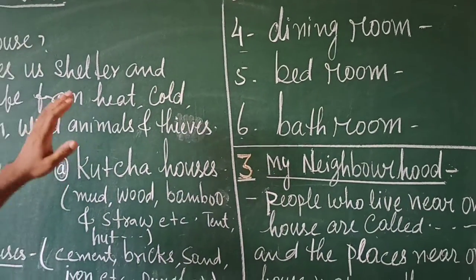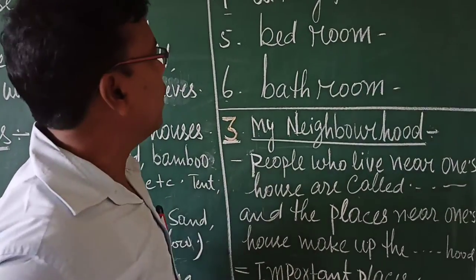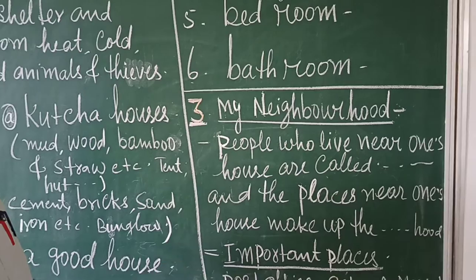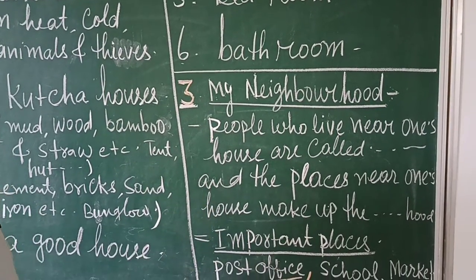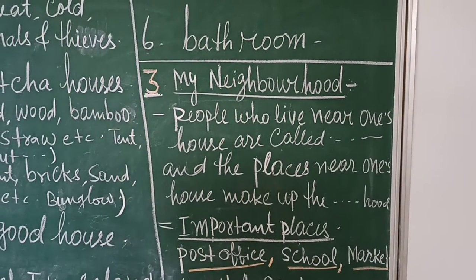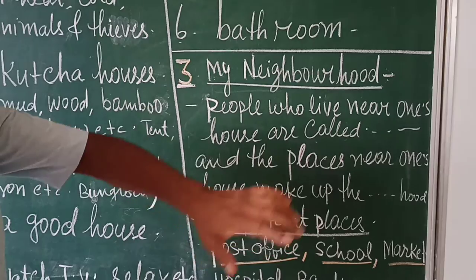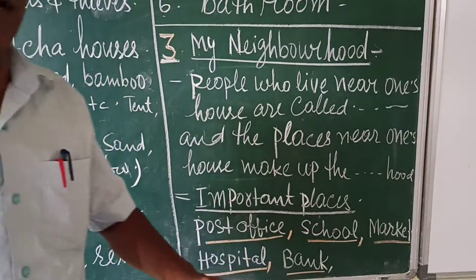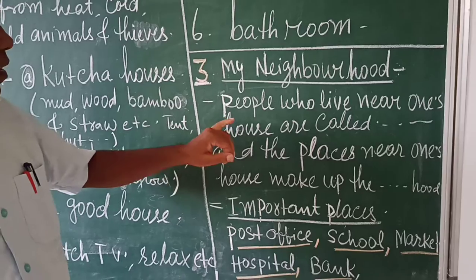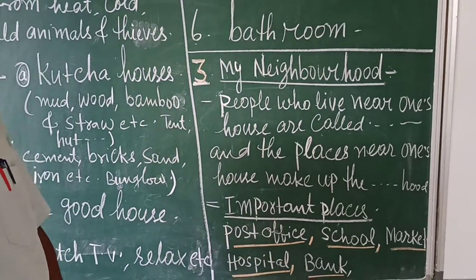So here we have learned about houses and different rooms. Now we move to the third point, which is my neighborhood. We have to know who our neighbors are. People who live near one's house are called our neighbors, and the places near one's house make up the neighborhood.